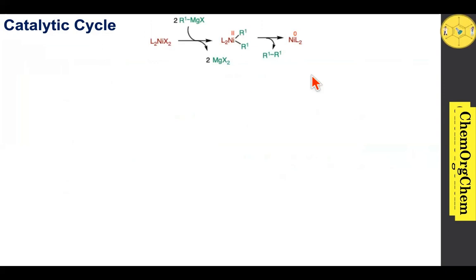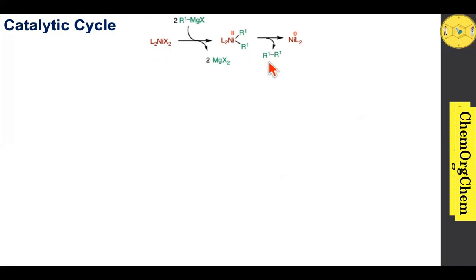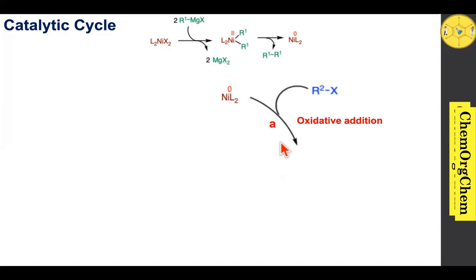To generate the nickel(0) active species, you can take any nickel(2+) salt. The nickel(2+) salt readily interacts with the Grignard reagent and undergoes transmetalation to yield a corresponding intermediate. This intermediate then undergoes reductive elimination to produce the nickel(0) active species.